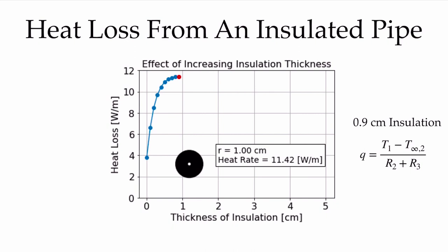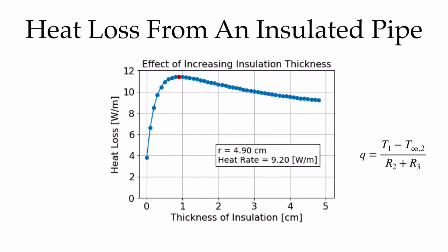At 0.9 centimeters of insulation, or a one centimeter outer radius for the entire system, the value is 11.42 — marked in red because the rate of increase of heat loss is decreasing, and this is actually the minimum resistance point. As I increase beyond this, the heat rate drops to 11.4 at a full centimeter, then continues decreasing at 1.1 centimeters. Going all the way out to 5 centimeters, it decreases continuously but never gets anywhere close to the initial value when there was no insulation.